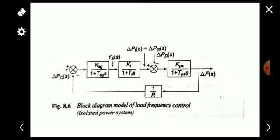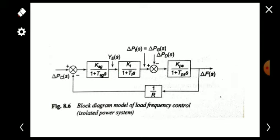In the complete block diagram: ΔPC(s) enters the speed governor system block [Sg / (1 + Tst·s)], whose output goes into the turbine model block [Kt / (1 + Tts·s)], and finally into the generator load model block [Kps / (1 + Tps·s)] to produce ΔF(s). With this, the block diagram model of load frequency control is complete. Thank you all.